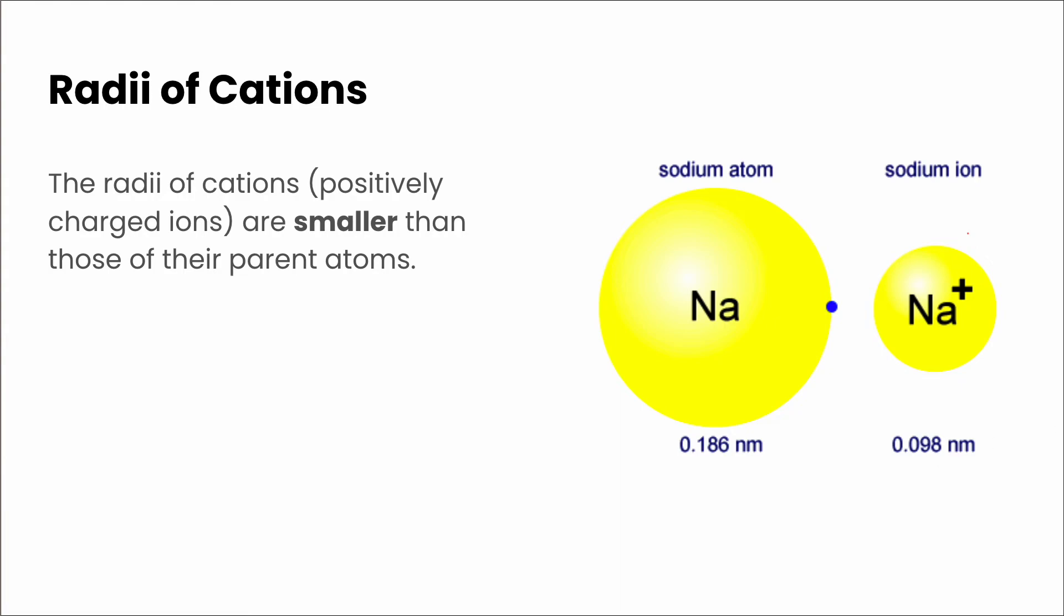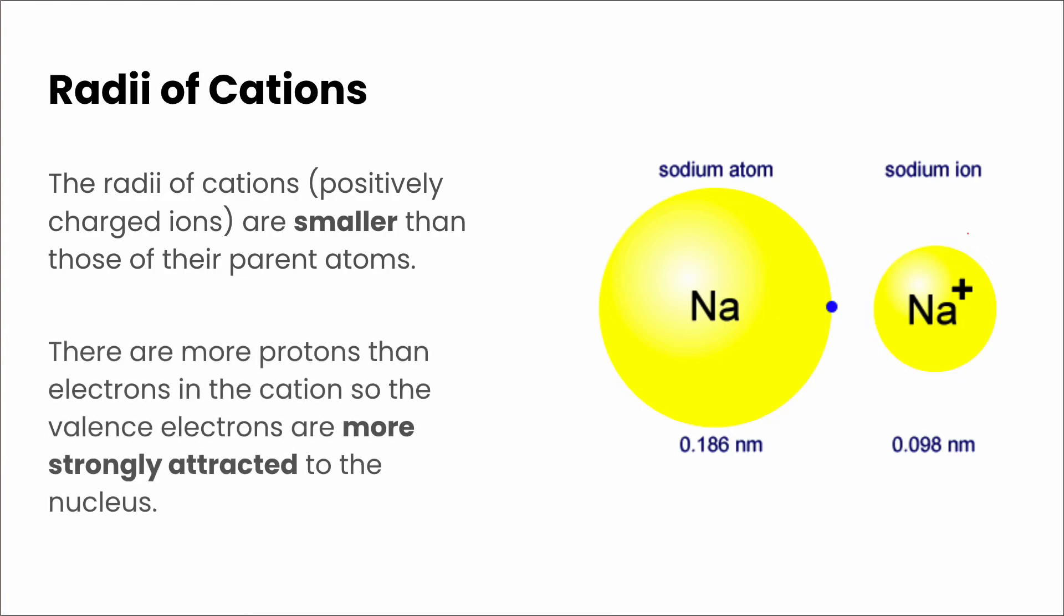And that's because there are more protons than electrons in the cation, so the valence electrons are more strongly attracted to the nucleus.